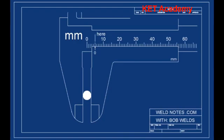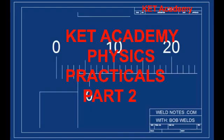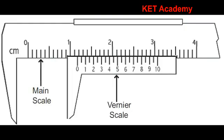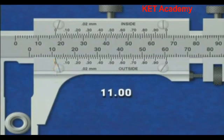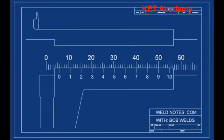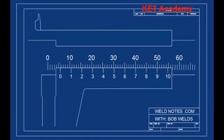Hello everyone and welcome to KED Academy physics practicals part 2. In today's video we are going to be looking at the vernier caliper — how we can use it to measure both the internal and external diameter of an instrument. This is the second video on measuring instruments. I uploaded a video on how to use a micrometer yesterday, and I'll put a link in the description box and above the video so you can check that out first.